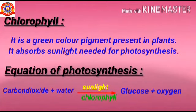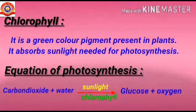Third point: chlorophyll. It is a green color pigment present in plants. It absorbs sunlight needed for photosynthesis.